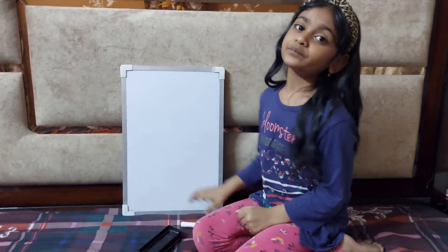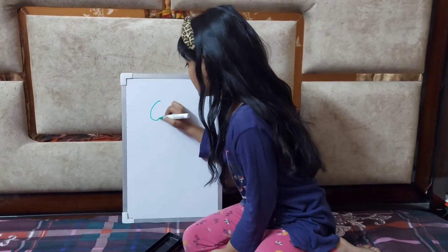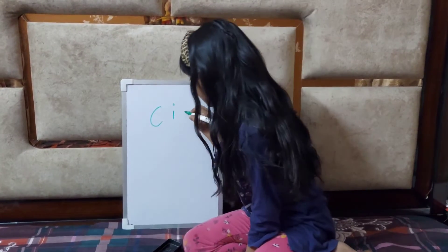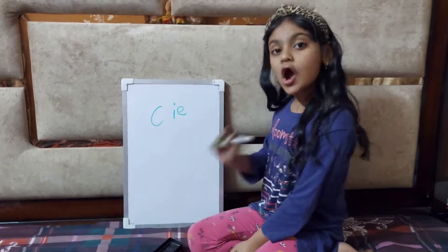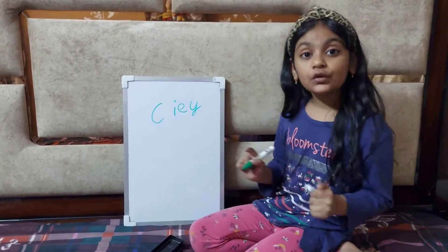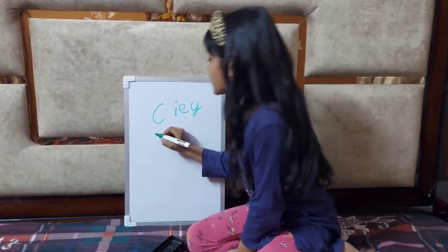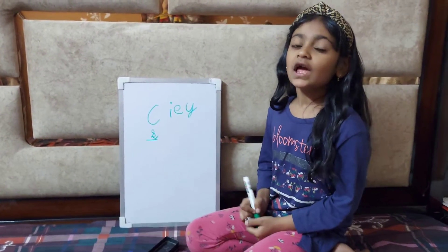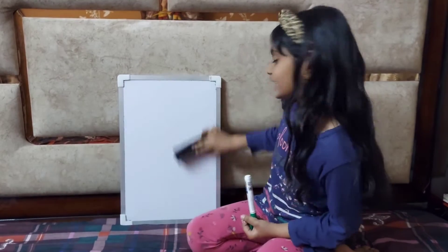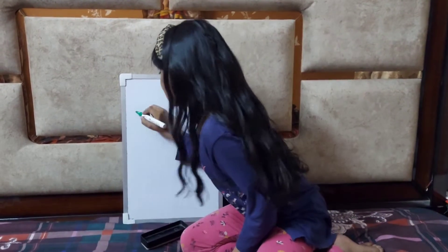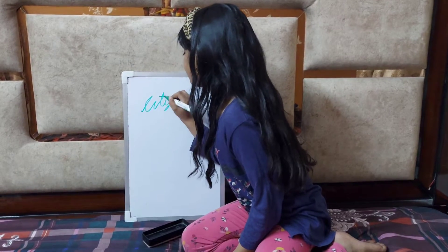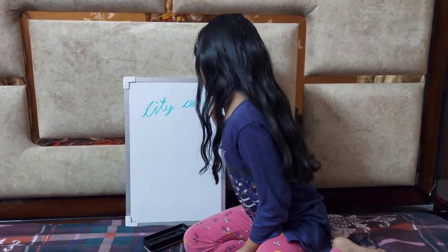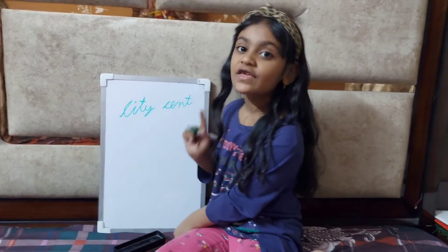So guys, whenever C comes before I, E, or Y, it will sound as Sa. Like, city — city. Cent. And cyst — C, Y, S, T.